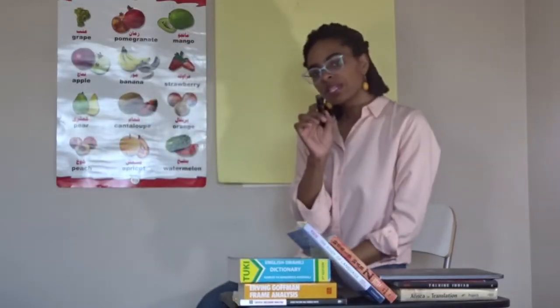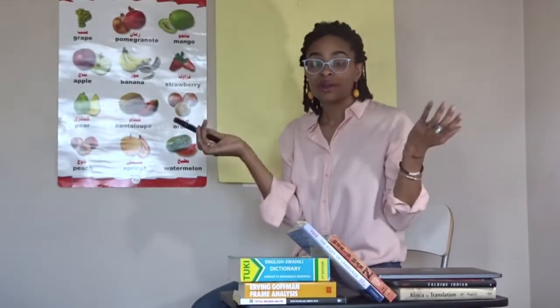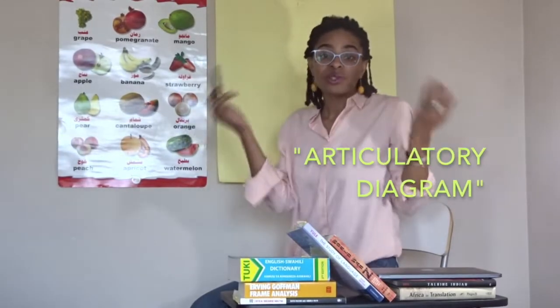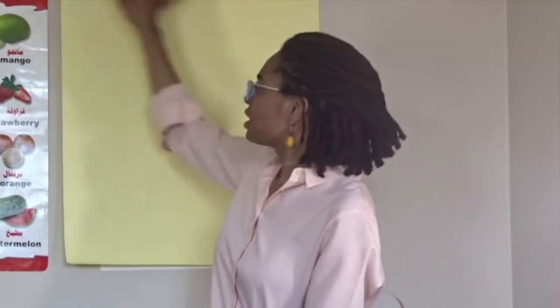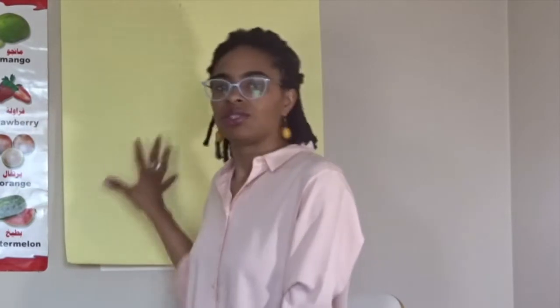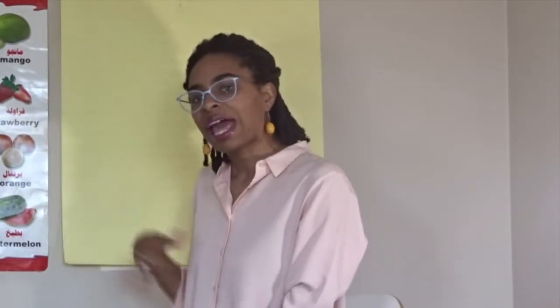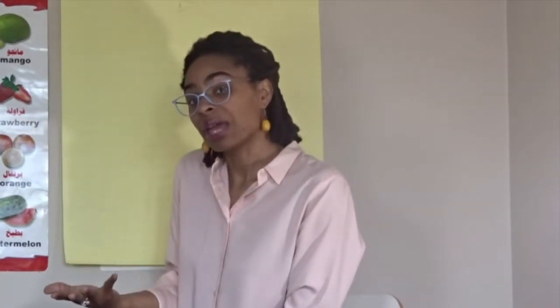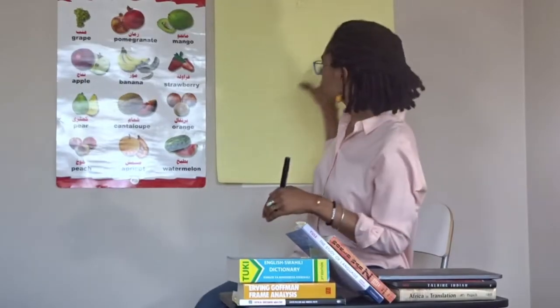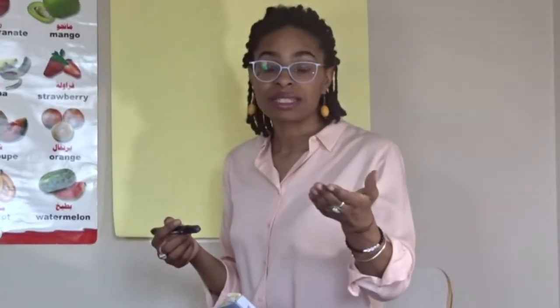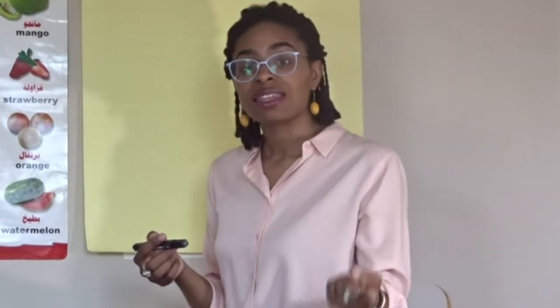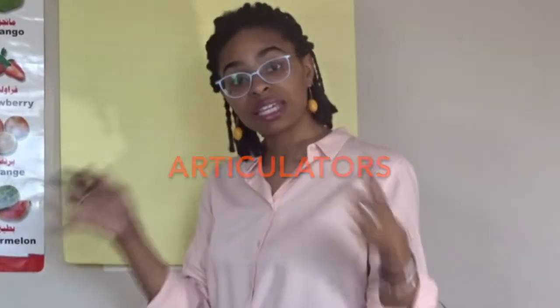One of the things we can do is start by drawing what's known as an articulatory diagram — some way of showing in 2D how it is that we produce the sounds that we need. We want to go ahead and try to draw what it is that we're doing. So let's start with the parts of the body that are involved in sounds. These are called articulators.